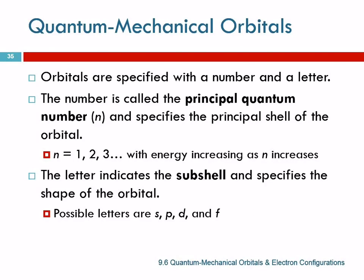Orbitals are specified with a number and a letter. The number is the quantum number, the principal quantum number. That's the same as in Bohr's model: 1, 2, 3, 4, etc.